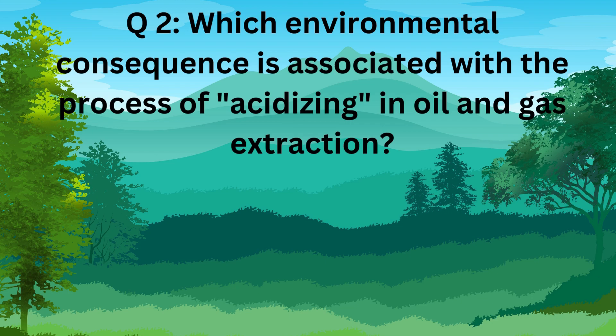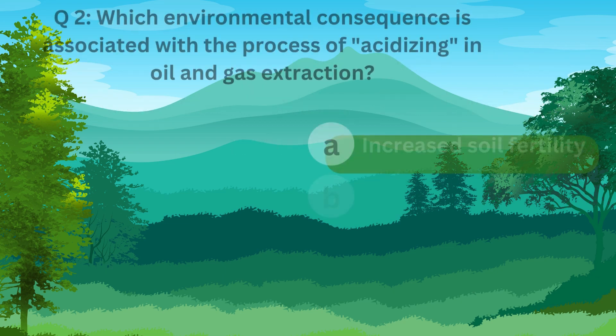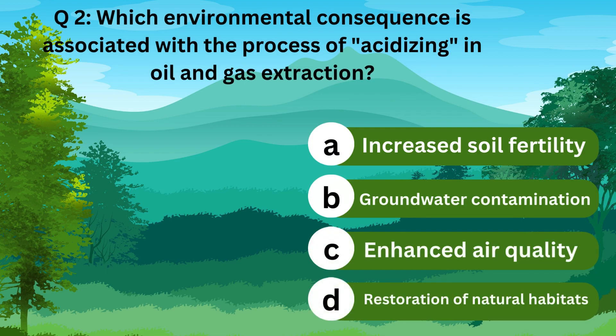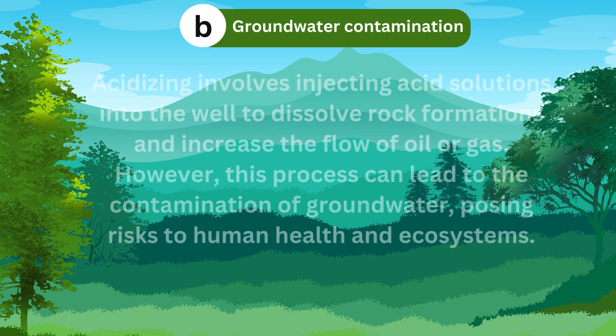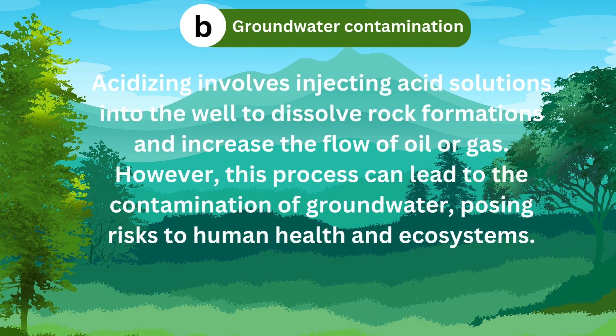Question 2. Which environmental consequence is associated with the process of acidizing in oil and gas extraction? A. Increased soil fertility. B. Groundwater contamination. C. Enhanced air quality. Or D. Restoration of natural habitats. The correct answer is B. Groundwater contamination.